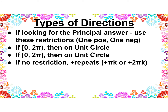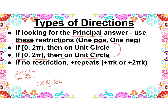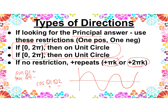When you do these problems you'll see different types of directions. If they're looking for the principal answer — just one answer — you use those quadrant restrictions: sine and tangent use quadrants 1 and 4, cosine uses quadrants 1 and 2. More often you'll see interval notation referring to the unit circle, between 0 and 2π, where a hard bracket includes 2π and a soft bracket does not. If there's no restriction and they want every single answer — remember the sine graph goes on forever — we include plus 2πk, where k accounts for all the repeating rotations.